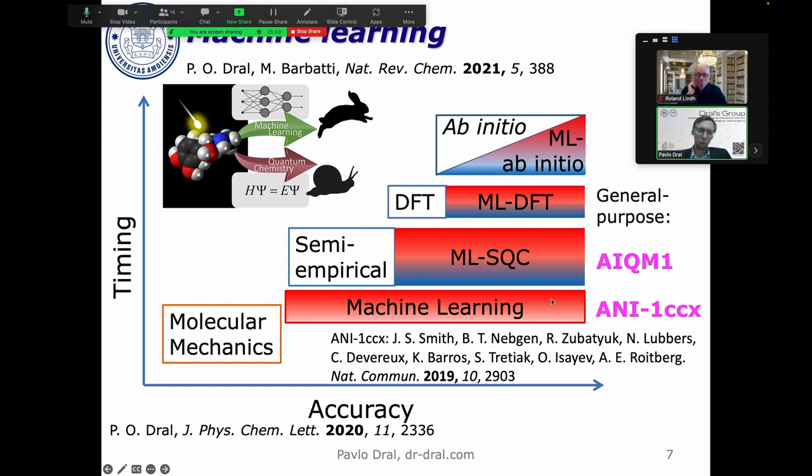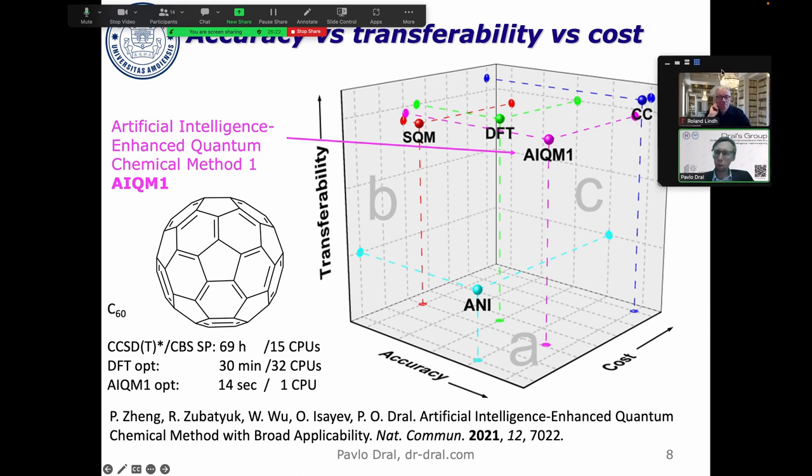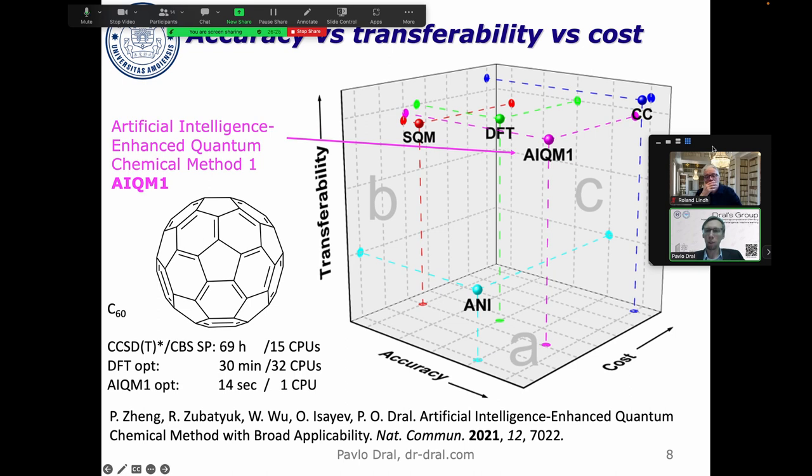If you look at pure machine learning models, I really like to highlight ANI-1CCX, which is not our method but is really excellent. It's one of the first successful attempts to get something you can use out of the box. Our AIKM1 is different - it improves semi-empirical methods but is also general purpose. You may ask, if you have ANI-1CCX, why do we need AIKM1? The explanation is that if you just use pure machine learning, it's still very hard to get everything you want. ANI-1CCX was trained on ground state energies and forces only for closed shell species. It cannot predict charged species, radicals, excited states, and so on.